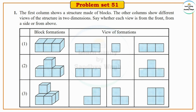The first column shows a structure made of blocks. The other columns show different views of the structure in two dimensions. We need to say whether each view is from the front, from a side, or from above.